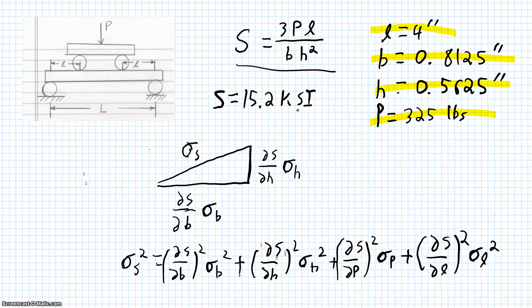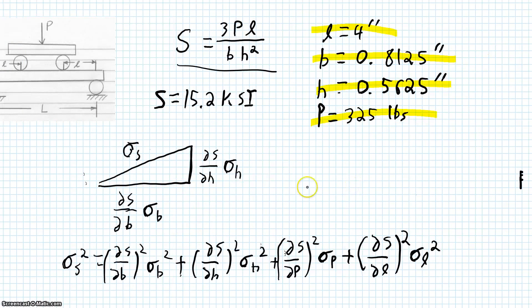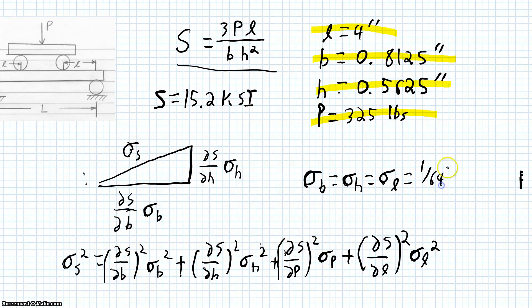If we wanted to be more precise, many of these are length measurements. We already said that the uncertainty in our base, height, and length measurements are all 1/64 of an inch. We could reduce all three of those by just using a better ruler — for example, a pair of calipers that has an uncertainty much smaller than 1/64 of an inch.